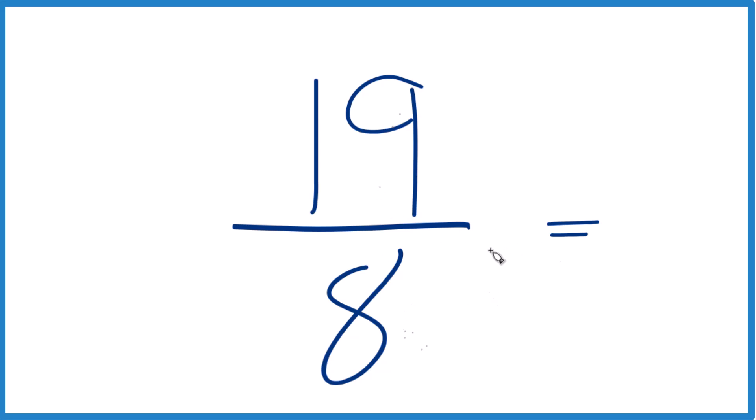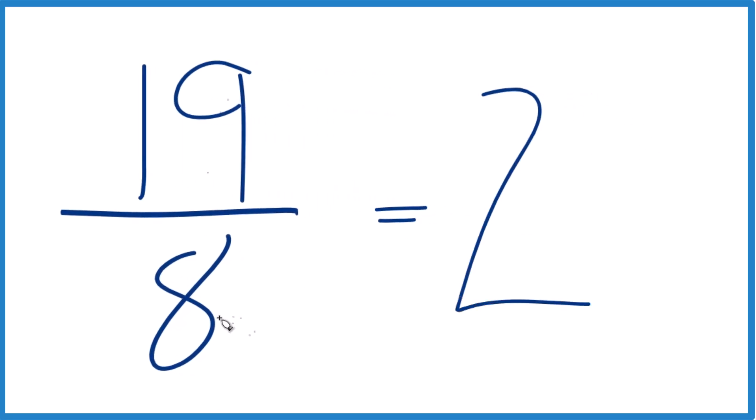8 goes into 19, let's see, 2 times 8 is 16 with 3 left over, and then we just bring the 8 across, and 19 eighths would equal 2 and 3 eighths.